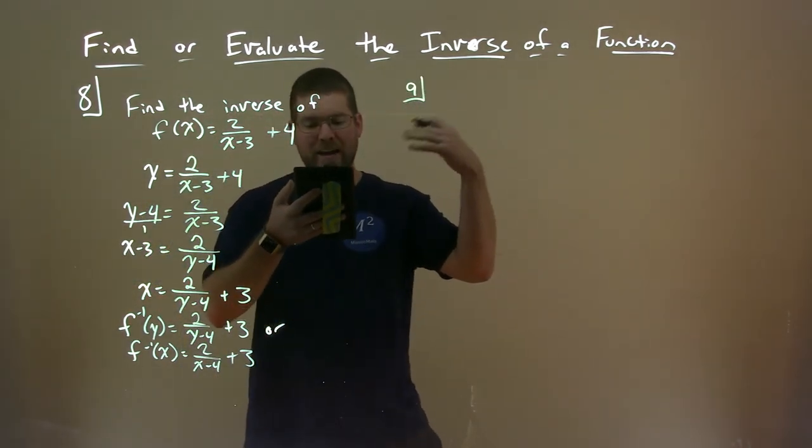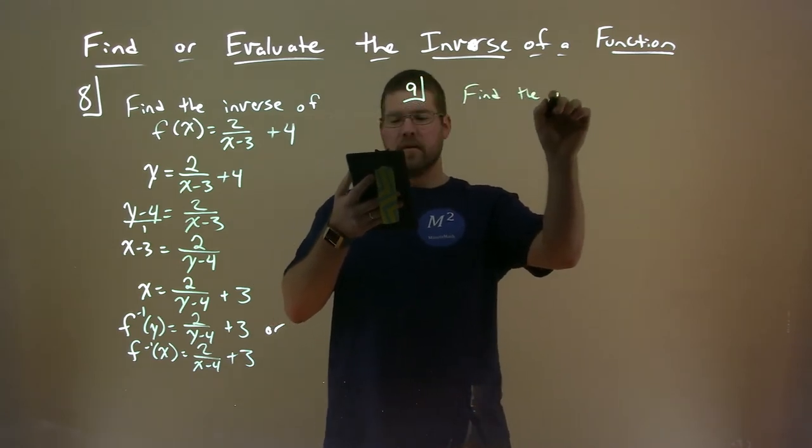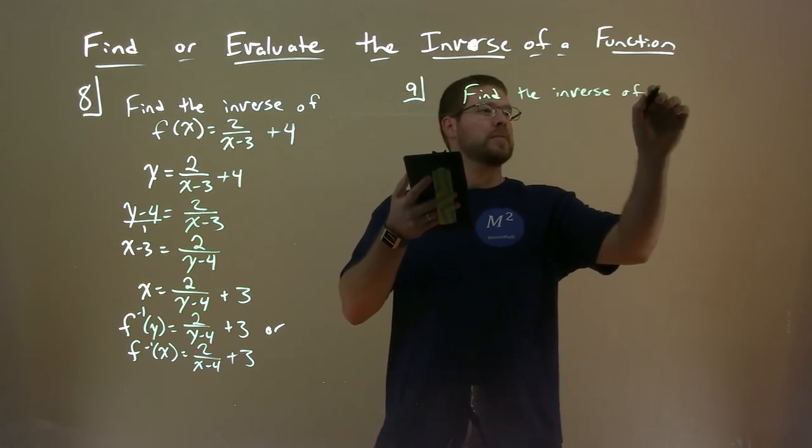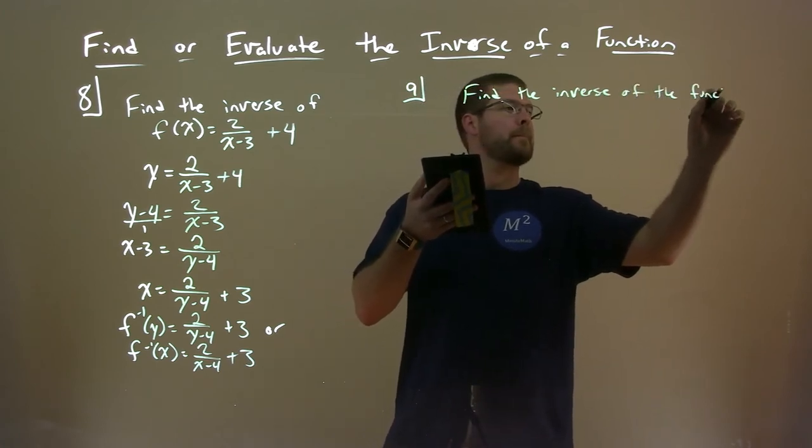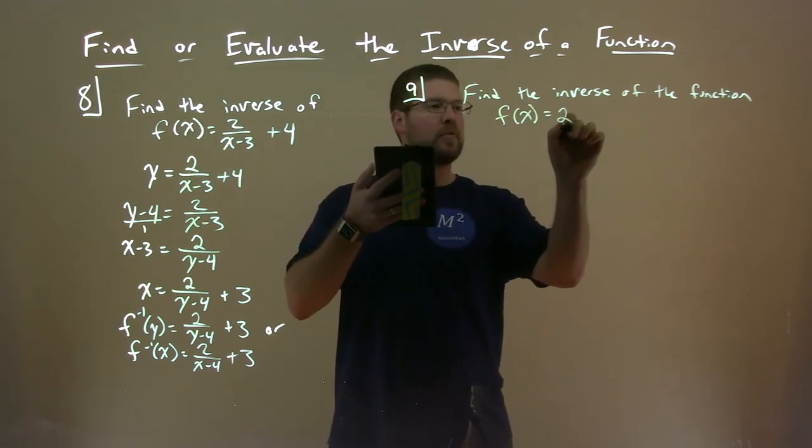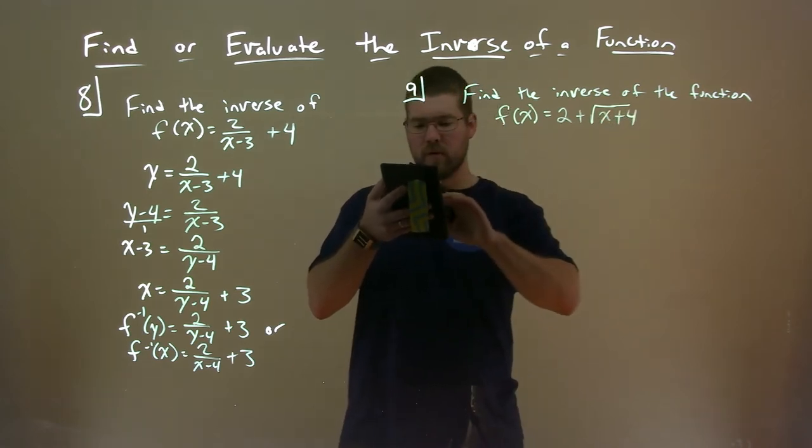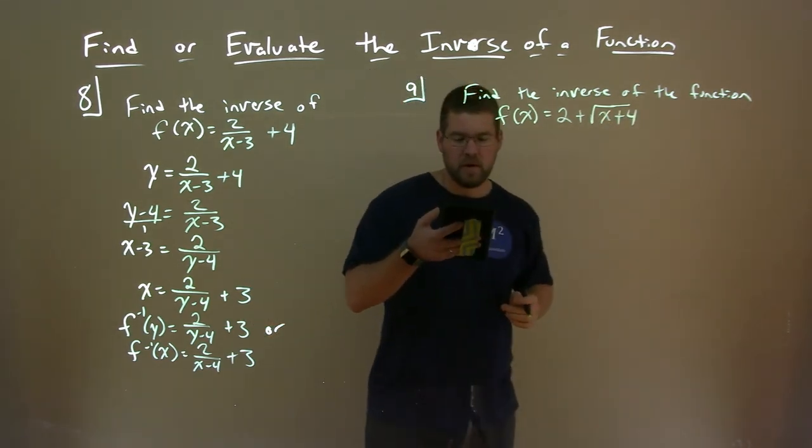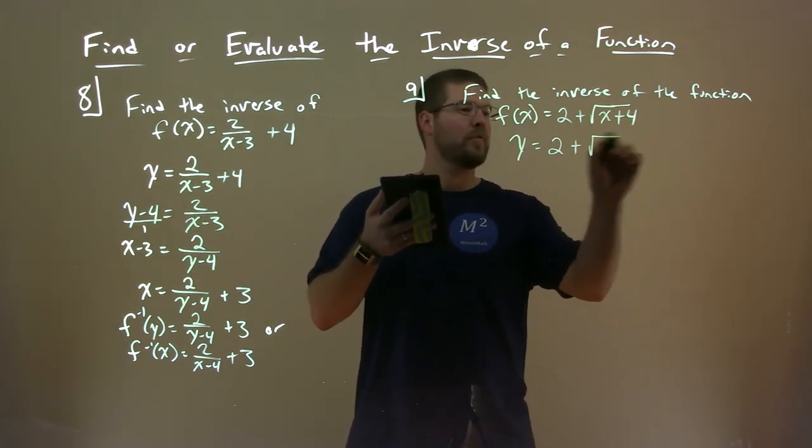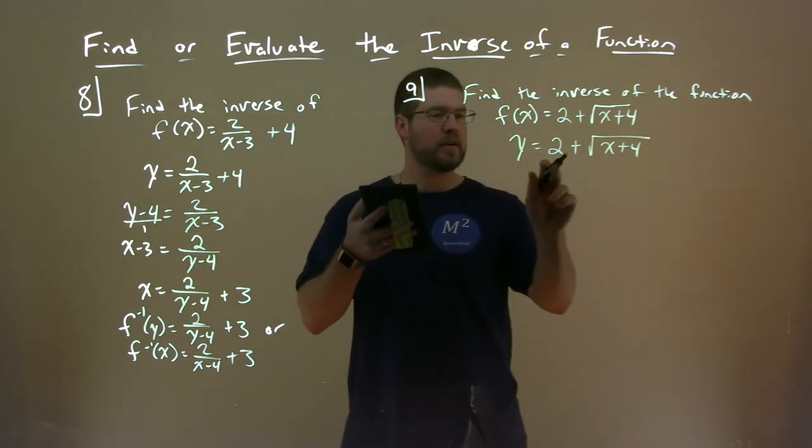This one's with radicals. So again, we want to find the inverse. Find the inverse of the function f(x) equals 2 plus the square root of x minus 4. So again, what we're going to do, we're going to write this as y. So y equals 2 plus square root of x minus 4. Let's try to solve for x here. Subtract 2 from both sides.